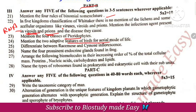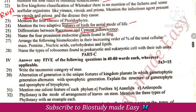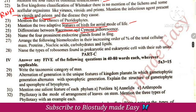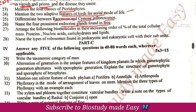Birds — Aves — have distinct adaptive features; I will discuss this. Next, racimose and cymose inflorescence. Endocrine glands in the frog include the adrenal gland, thymus, thyroid, and parathyroid.